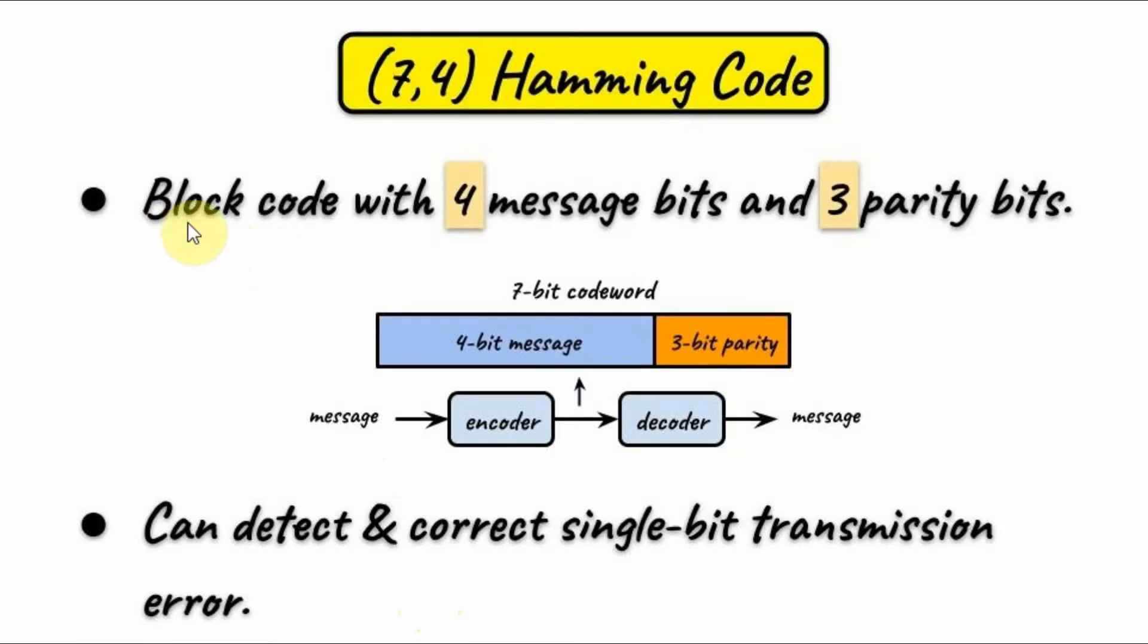The 7-4 Hamming code is one type of block code, with 4 message bits and 3 parity bits. The 4-bit message is applied into the encoder that generates 3 parity bits that are added to the 4-bit message, therefore generating a 7-bit codeword.